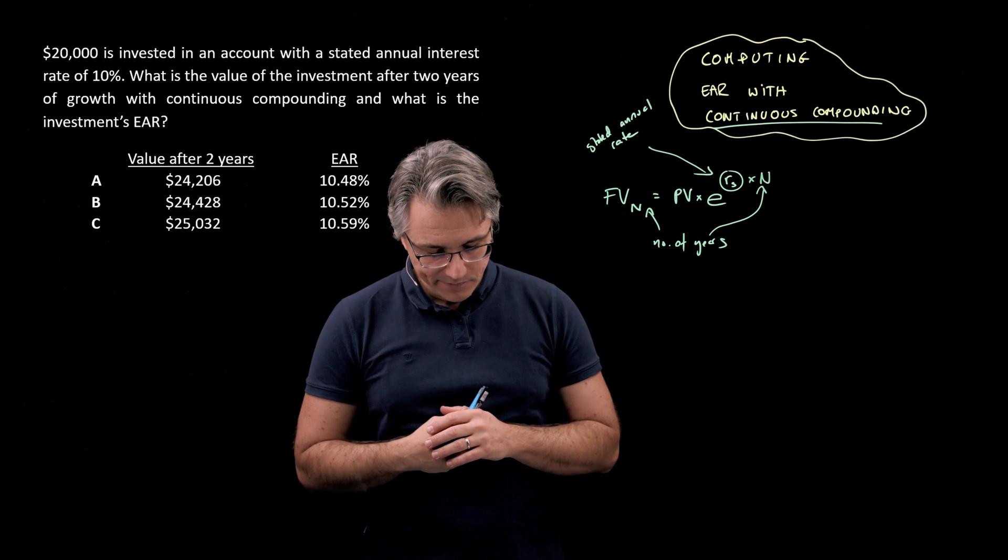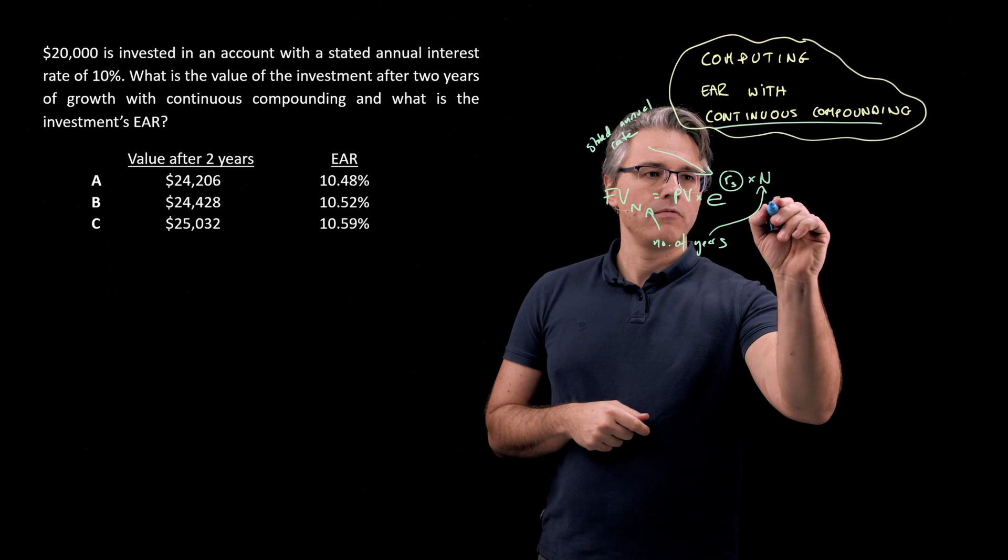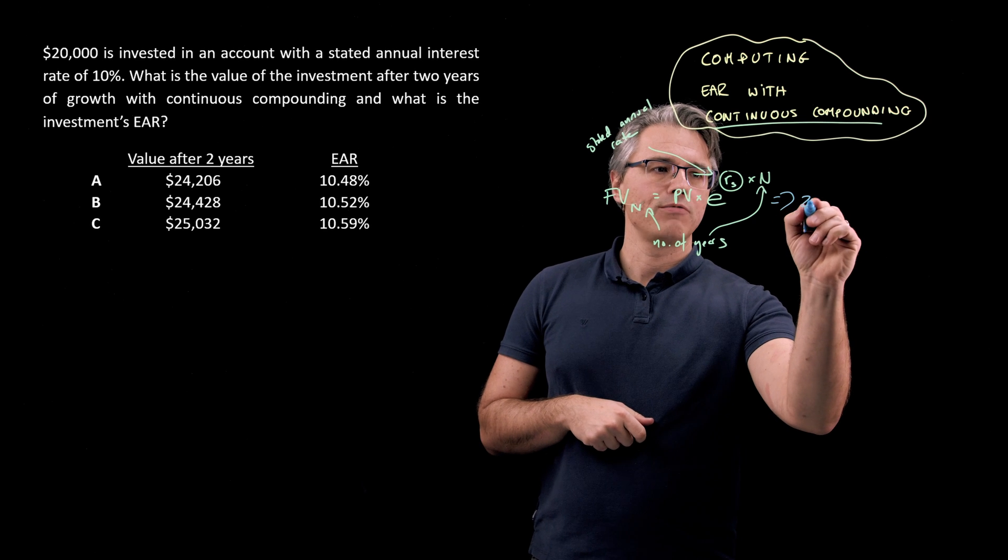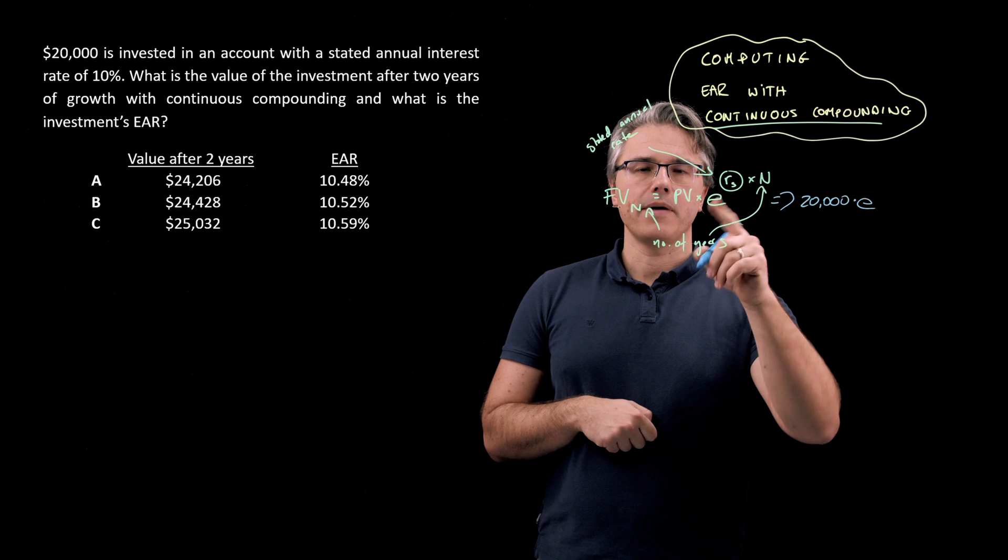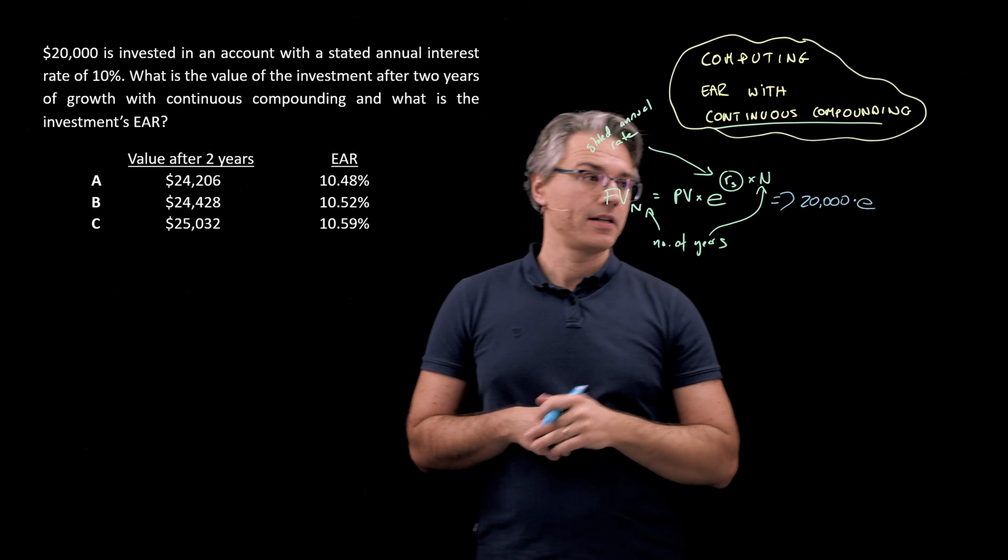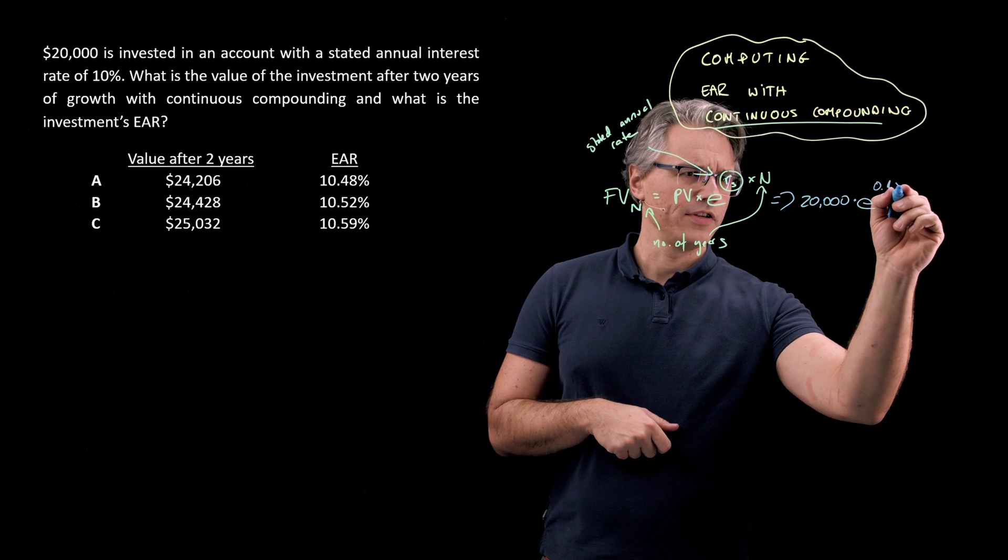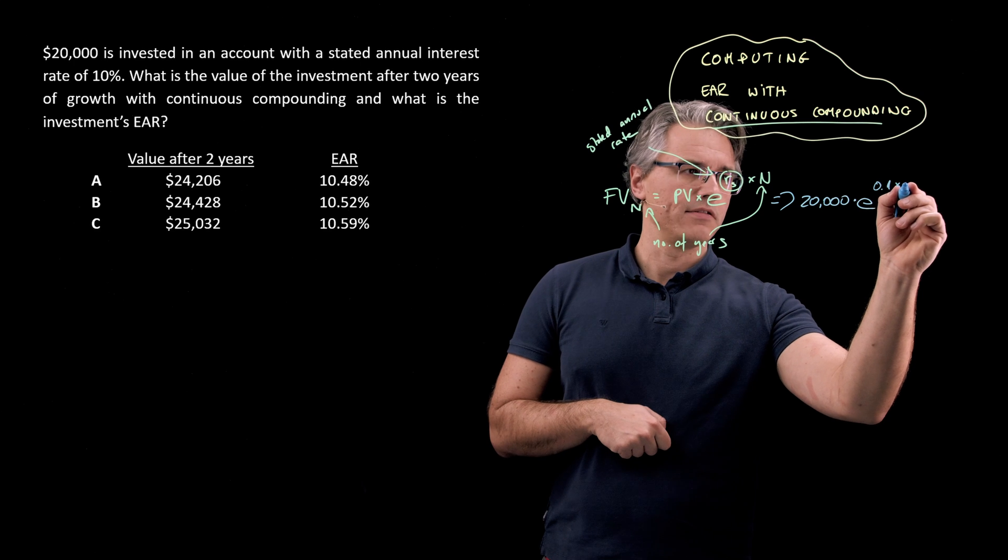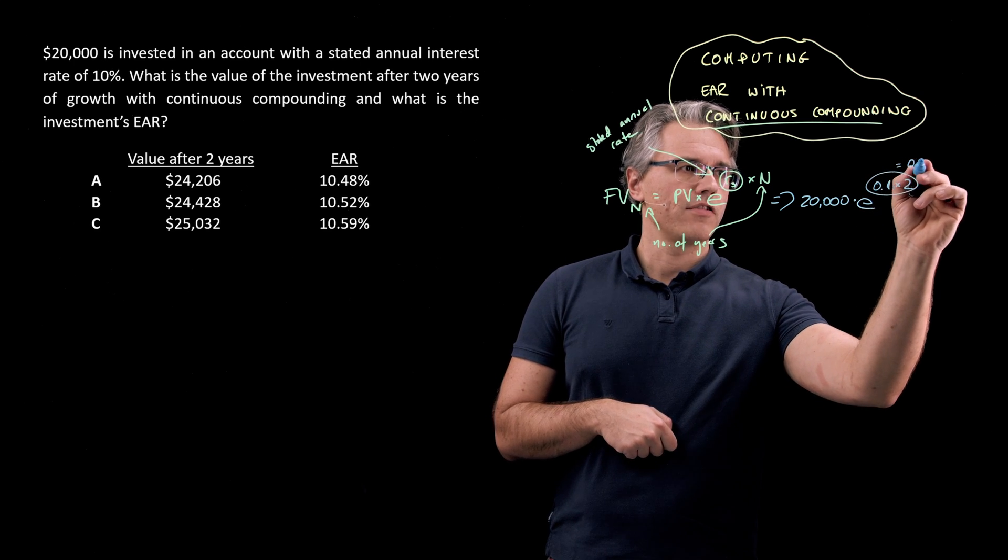Let's use the numbers from the question to populate this formula. So we're going to get PV that's twenty thousand multiplied by E to the power of R_S. Well R is 10%, so 0.1 times number of years that's two years, isn't it, value after two years. So this is effectively going to give us 0.2.